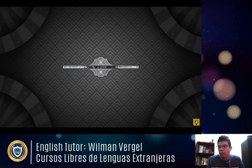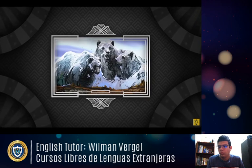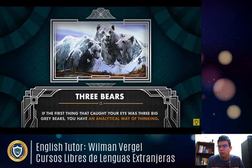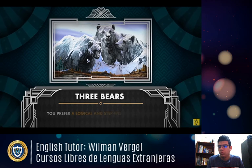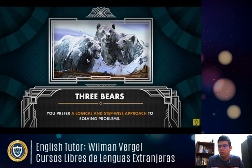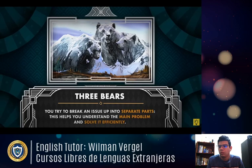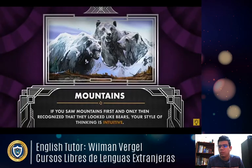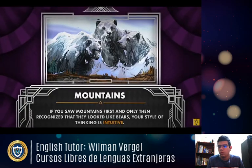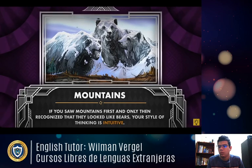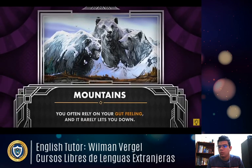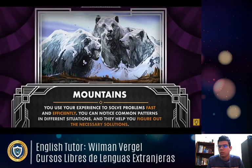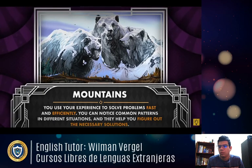Number two — what do you see first? Three bears. If the first thing that caught your eye was three big gray bears, you have an analytical way of thinking. You prefer a logical, stepwise approach to solving problems and try to break an issue into separate parts. Mountains — if you saw mountains first and only then recognized they look like bears, your style of thinking is intuitive. You often rely on your gut feeling, use your experience to solve problems fast, and can notice common patterns in different situations.